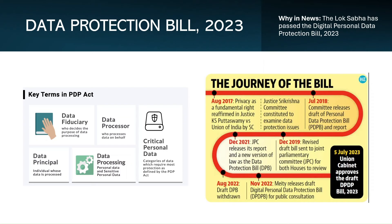Let's explore the key features of the Data Protection Bill. Firstly, personal data is defined broadly, encompassing any information identifying an individual. The bill applies to digital personal data collected both online or offline but in a digitized form. Consent is an important aspect — processing of personal data is allowed only for lawful purposes with the individual's own consent. For minors, parental or guardian consent is mandated. Data principals, the individuals whose data is being processed, have rights including obtaining information, seeking correction or erasure, and raising grievances.